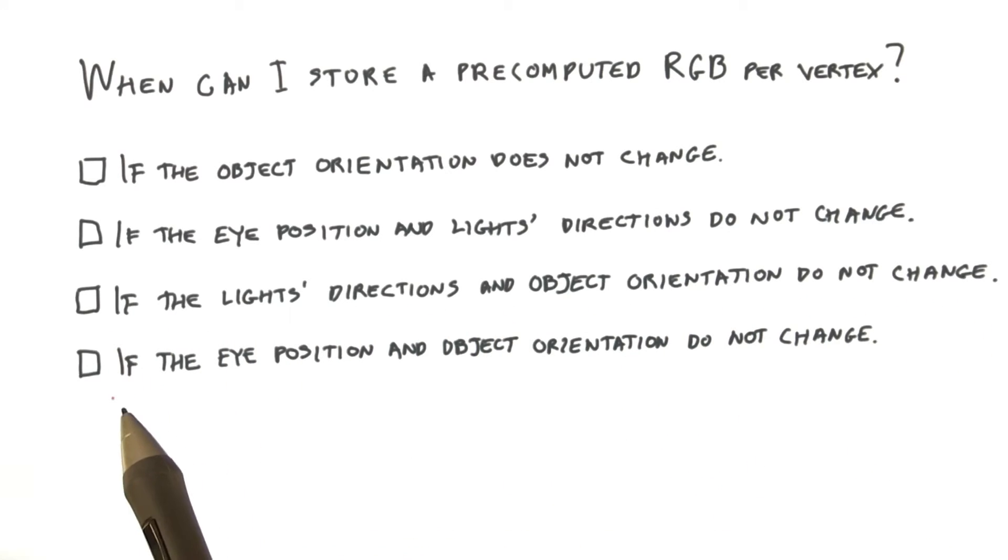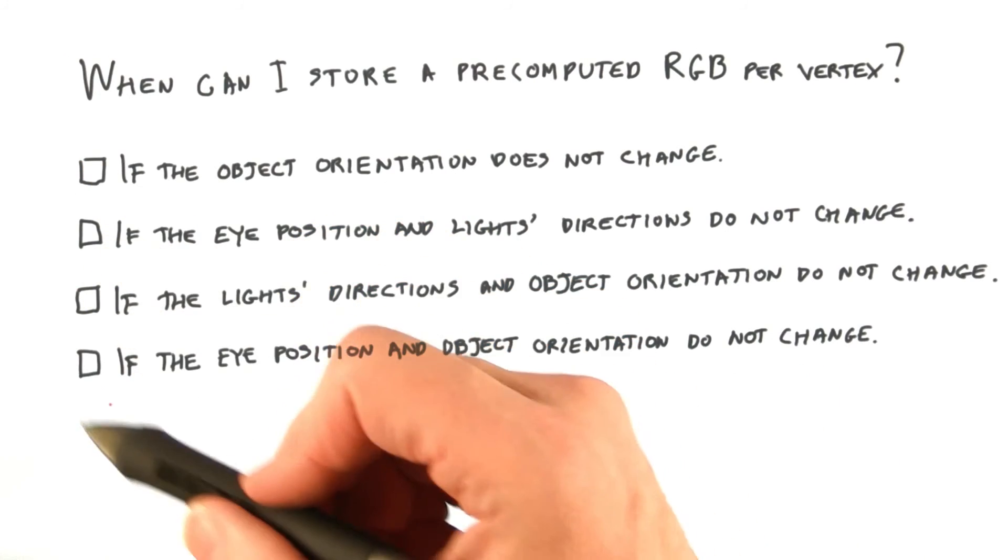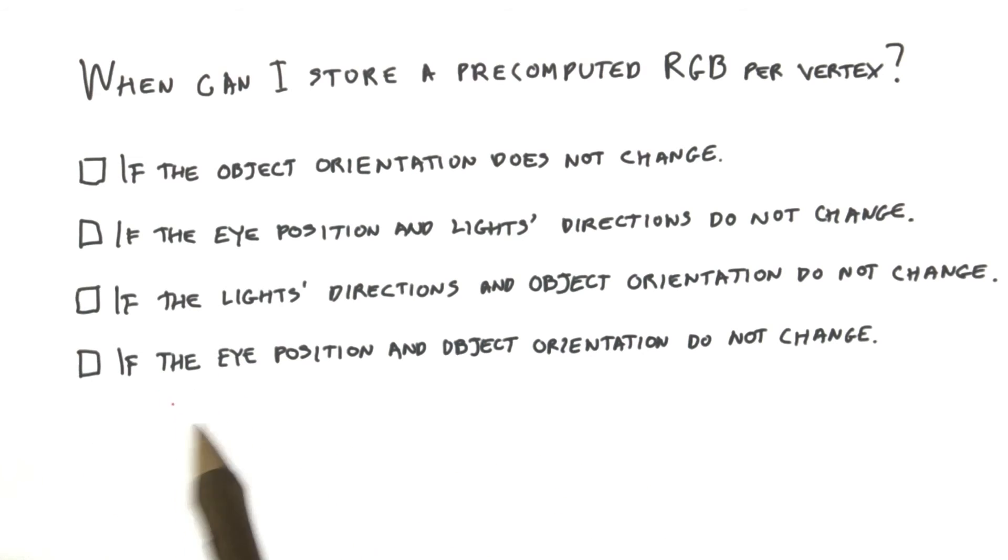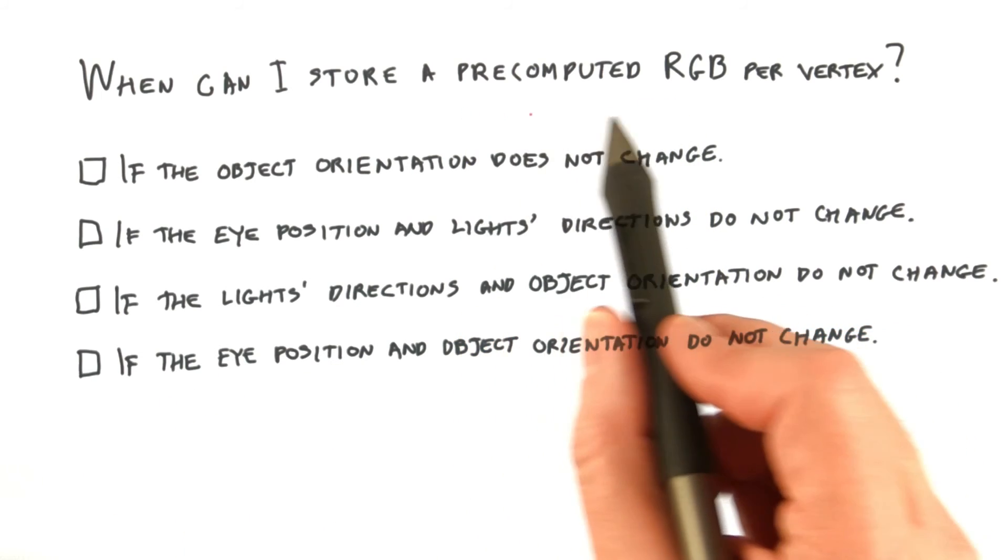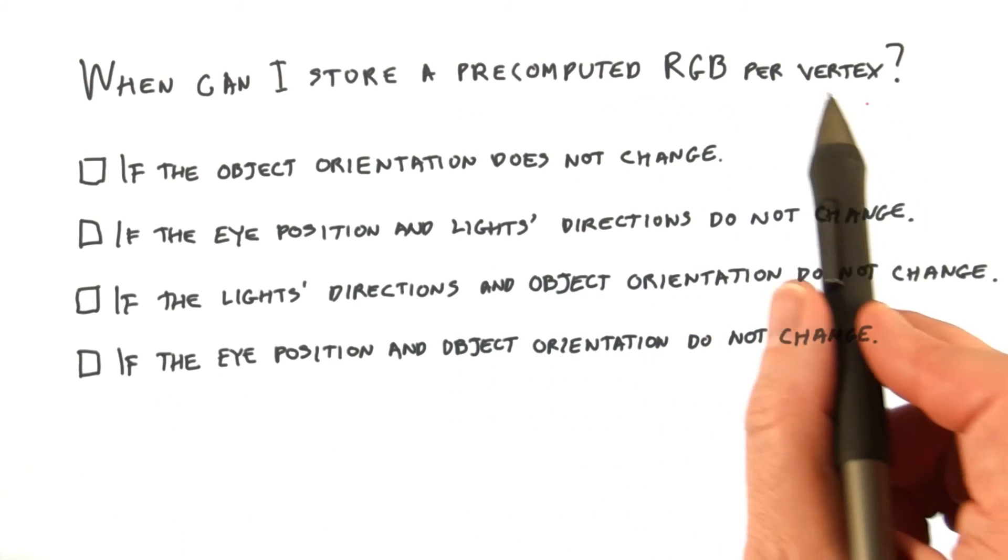And finally, if the eye position and object orientation do not change. So which of these answers is the one that allows you to pre-compute an RGB per vertex and use that instead of having to do lighting calculations each frame?